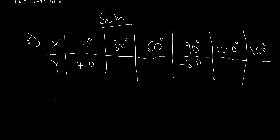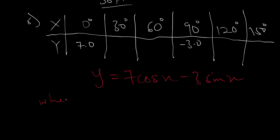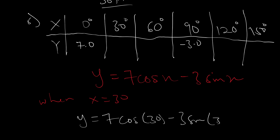Given the expression y = 7cosx − 3sinx, when x = 30°, y = 7cos30 − 3sin30. When you punch this on your calculator, you should get 4.6. So we write 4.6 here.